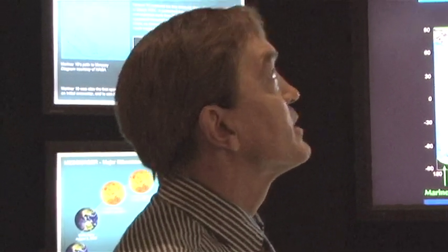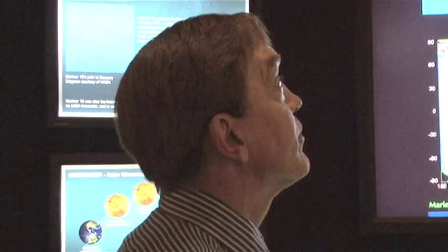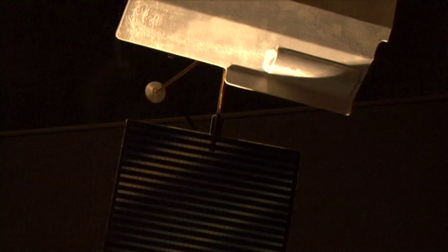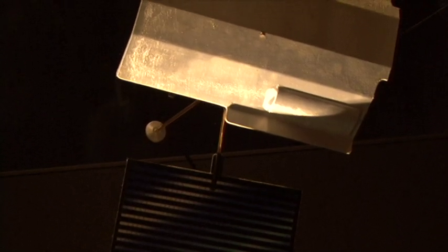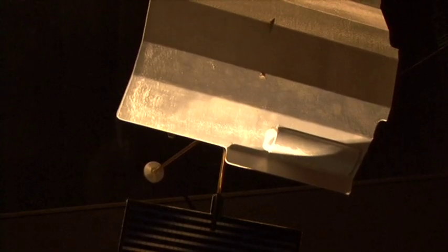Something to point out about the spacecraft that I love to point out: this thing right here that looks like a shield is actually what it is—it's a shield, a heat shield, a sunshade.